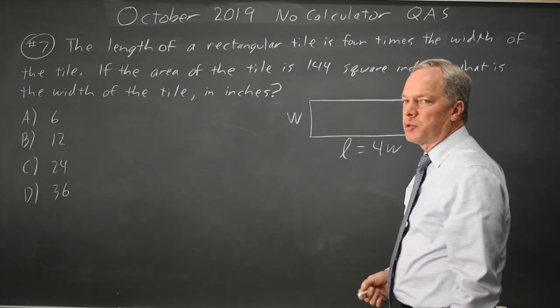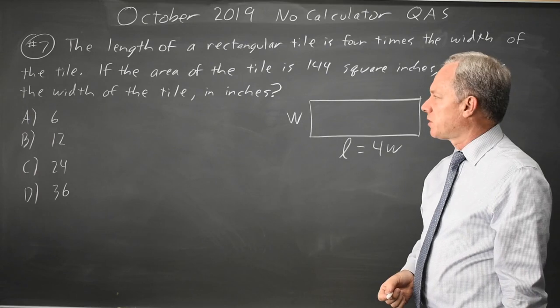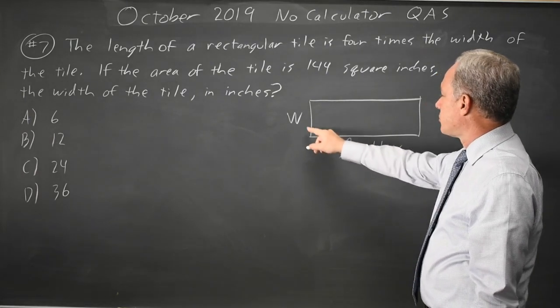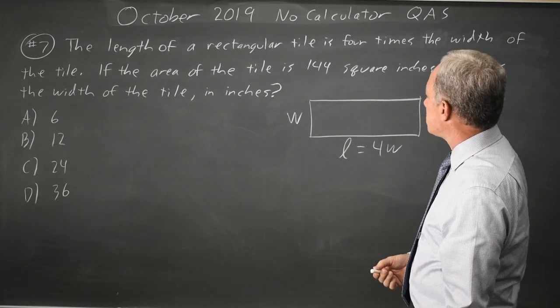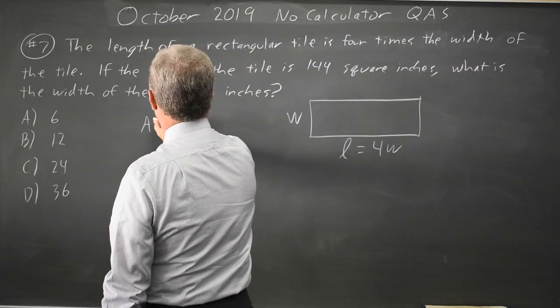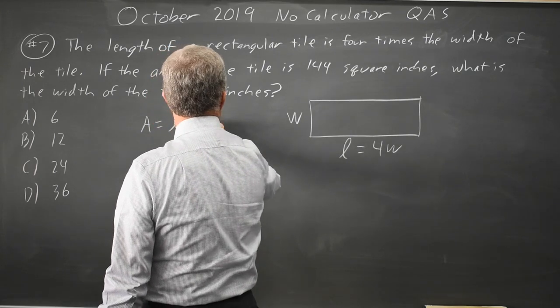I like to draw them somewhat proportional so that I don't get confused and put the answer for length when they're actually asking for width. So L is 4W and L is longer than W, and we're given the area, which is length times width, is 144.